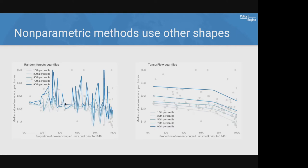Non-parametric methods include random forest, which goes kind of crazy here, and TensorFlow — a deep learning approach that produces kinks. The innovation behind deep learning is it allows you to mix linear models with kinks, stitching together linear predictors to introduce non-linearities.